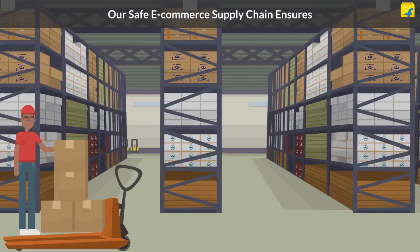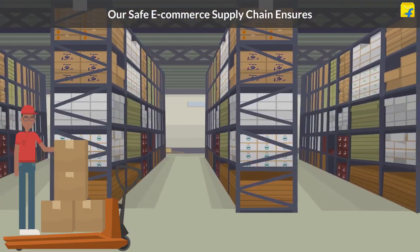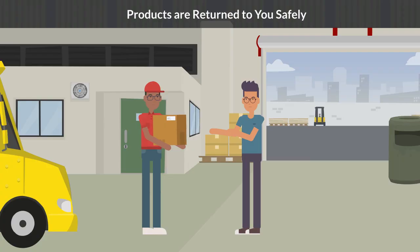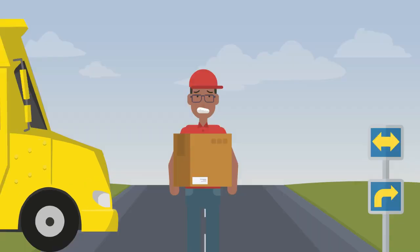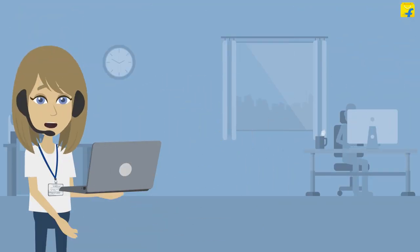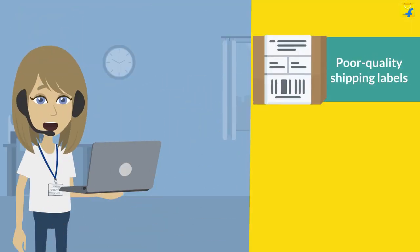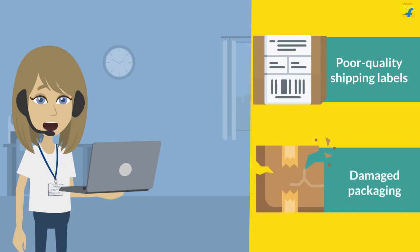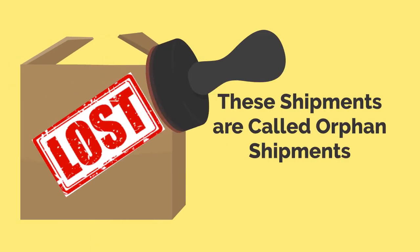With our safe e-commerce supply chain, we ensure that all your products are returned to you safely. However, there can be situations wherein the shipments are lost in transit in the event of losing its identity. This could happen due to poor quality shipping labels or damaged packaging. Such shipments are called orphan shipments.